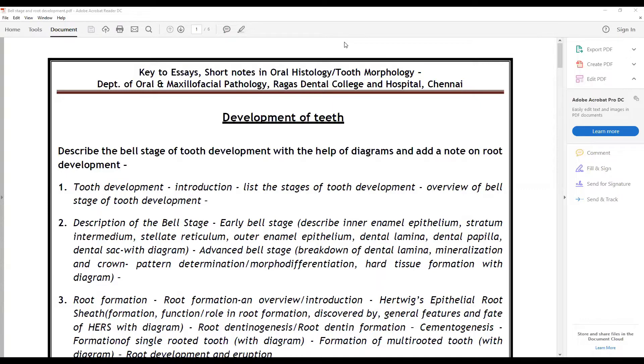Describe the bell stage of tooth development with the help of diagrams and add a note on root development. The key points for this are: first, the stages of tooth development - introduction, list the stages of tooth development, give an overview of the bell stage. Description of the bell stage - early bell stage, describe the inner enamel epithelium, stratum intermedium, stellate reticulum, morphology of outer enamel epithelium, dental lamina, dental papilla, dental sac with diagram. The advanced bell stage - how the dental lamina breaks down, mineralization, pattern determination, morphodifferentiation, hard tissue formation, all along with diagrams.